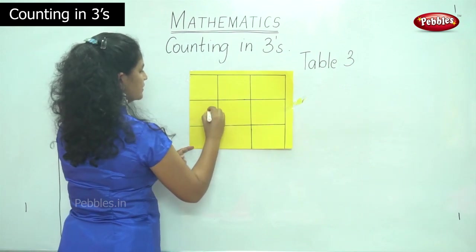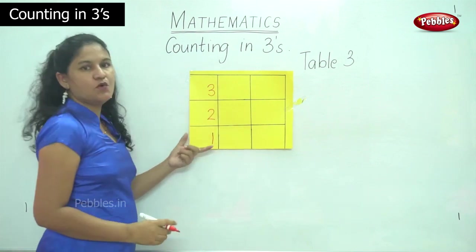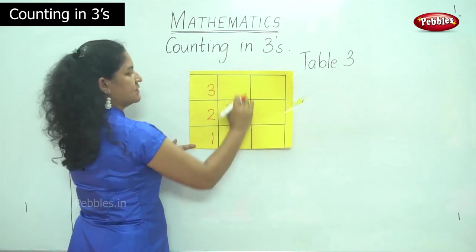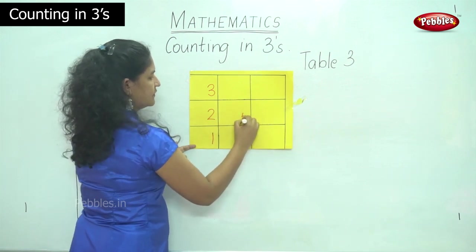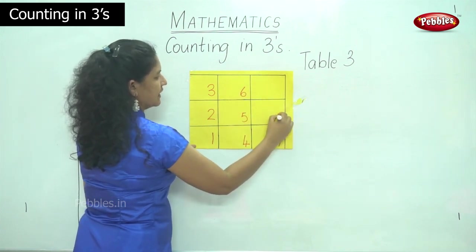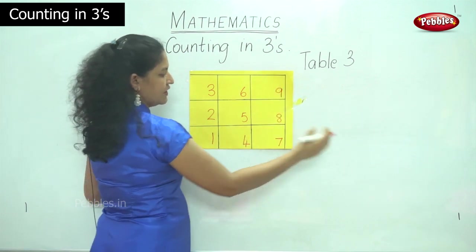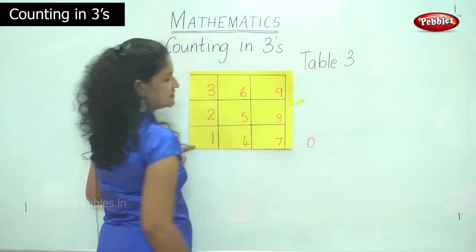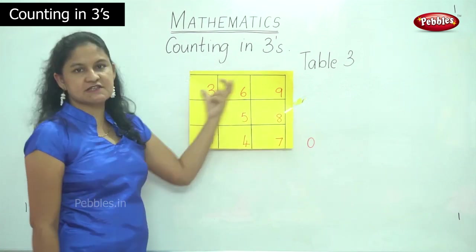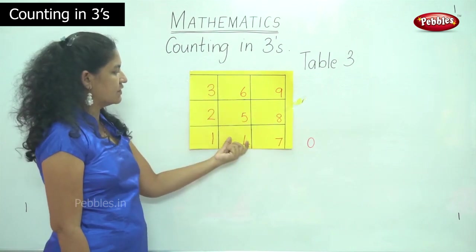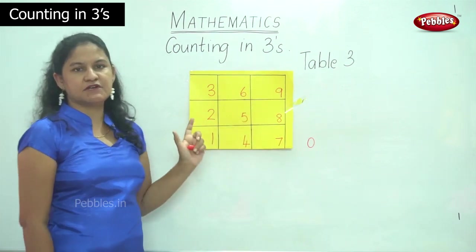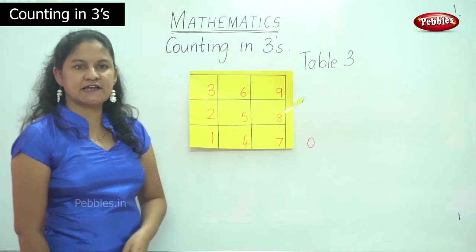So in the 1's place, we start writing from the bottom of the grid, going bottom to top: 1, 2, 3. Then we come down again to the bottom: 4, 5, 6. Again down: 7, 8, 9. And we write 0 on the outer side of the box.